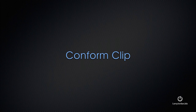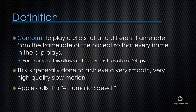Our next effect is called conforming a clip. Conforming actually has a number of different definitions. In this case, I'm using conform to mean that we are playing a clip shot at a different frame rate from the project frame rate so that every frame in the clip plays. For example, we shoot a clip at 60 frames a second but play it inside the project at the project speed of 24 frames a second. We generally do this to achieve a very smooth, very high quality slow motion. We used to call this over-cranking in film terms.